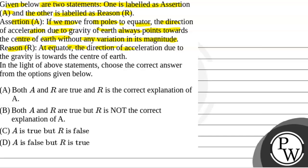Reason R: At equator, the direction of acceleration due to the gravity is towards the centre of the earth. In the light of above statements, choose the correct answer from the options given below.